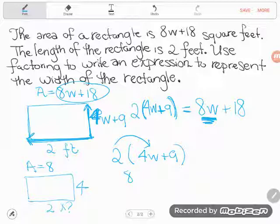Well 2 times 4w is 8w. And 2, if you add 9 twice, that's the same as adding 18. Or 2 times positive 9 is positive 18. So it does check.